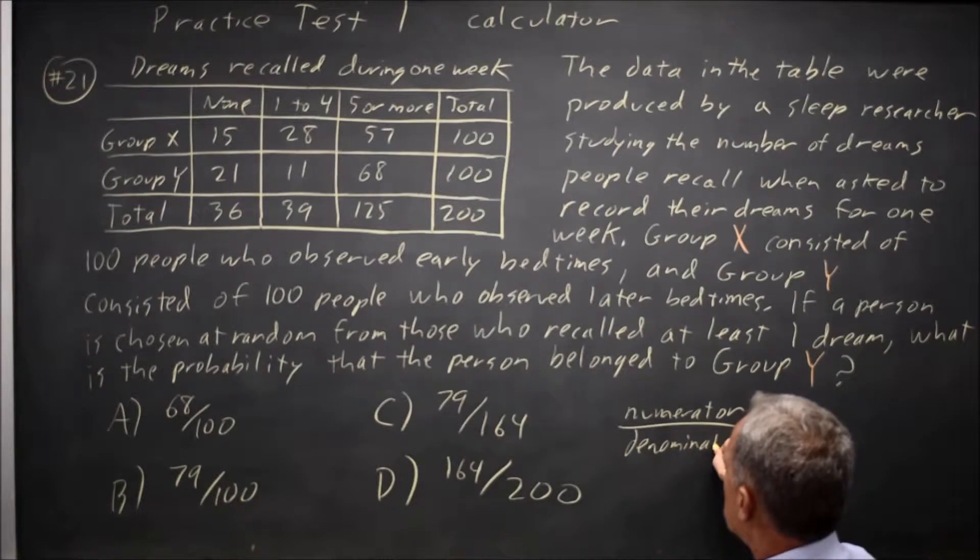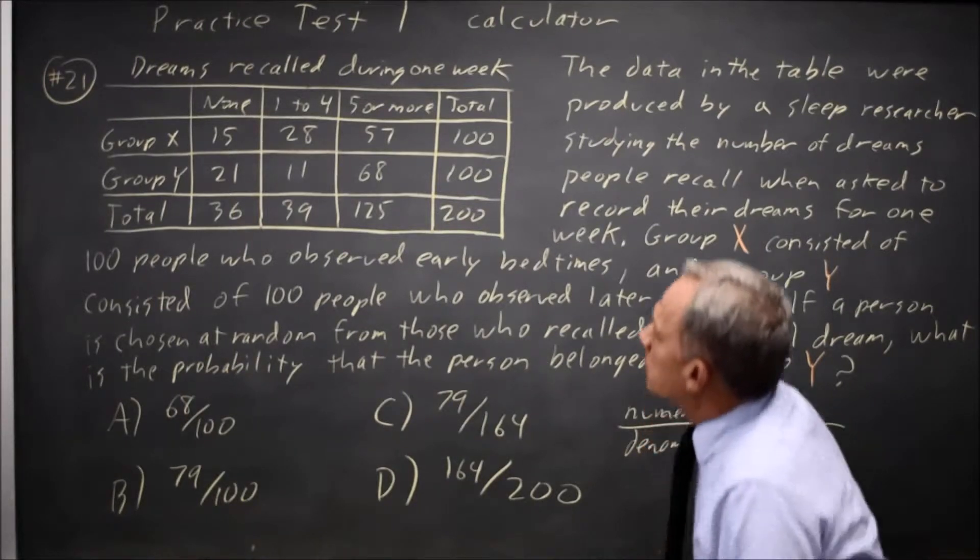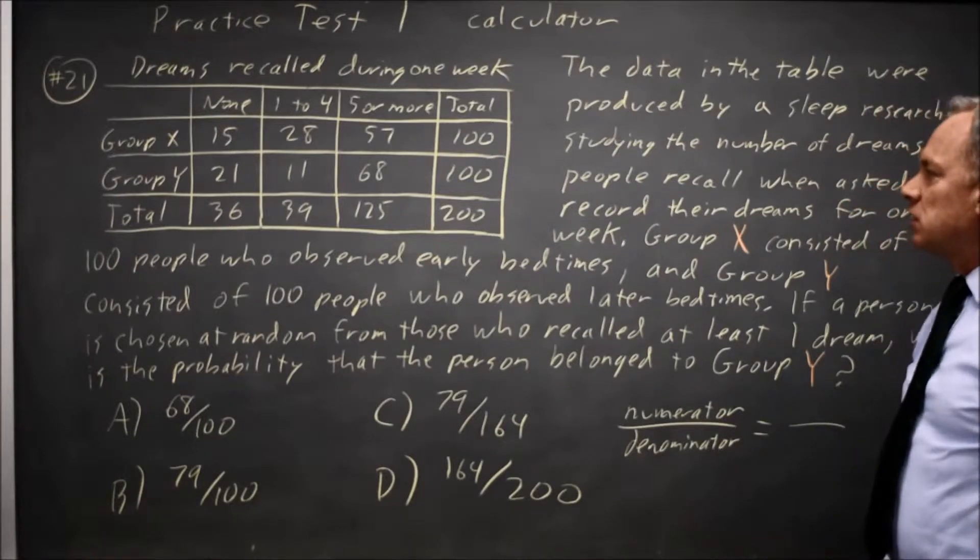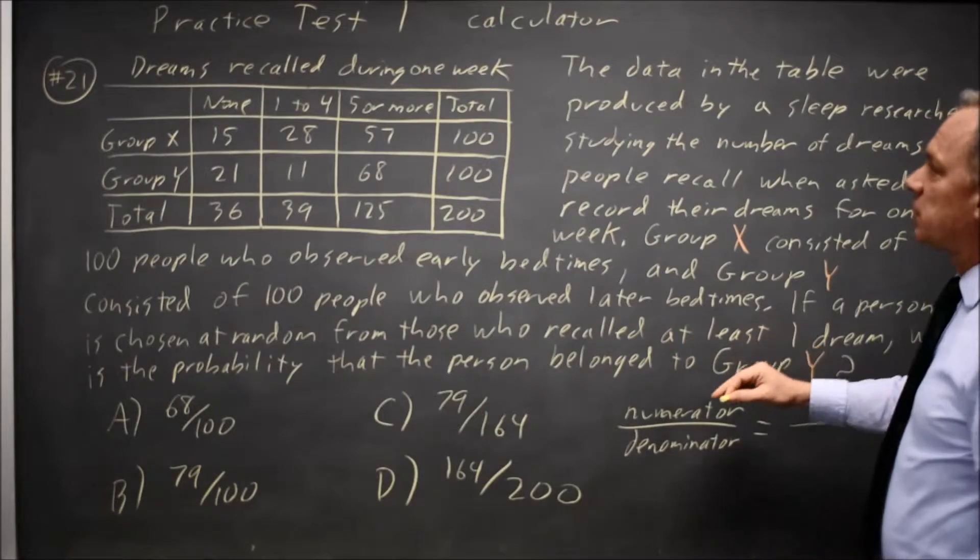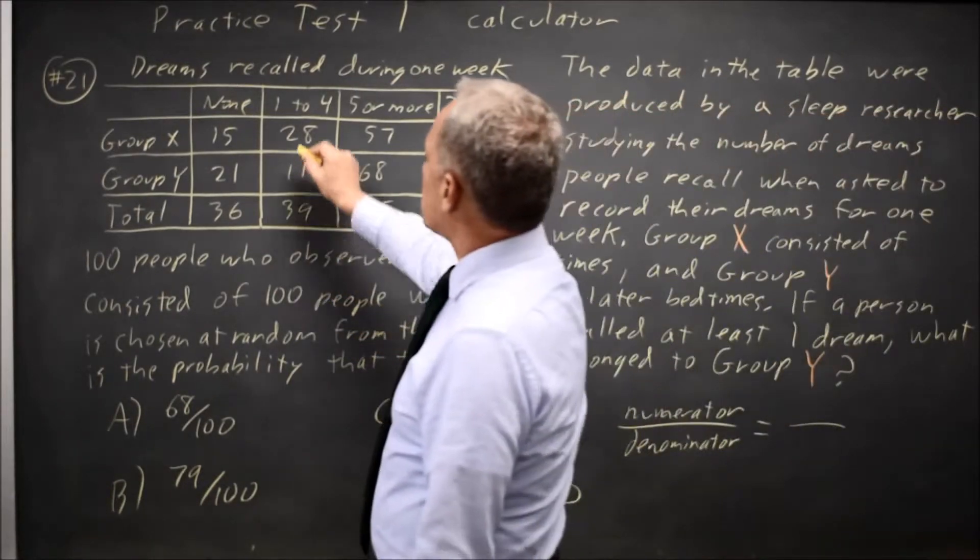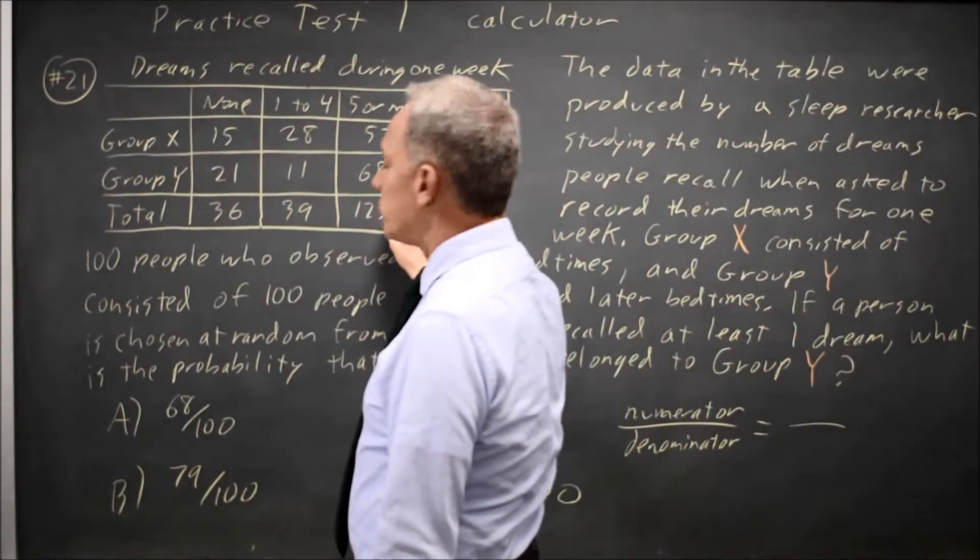The denominator is all individuals who might have been chosen based on the table. The individuals who might have been chosen are those who recalled at least one dream, so that is one to four dreams, but also five or more.